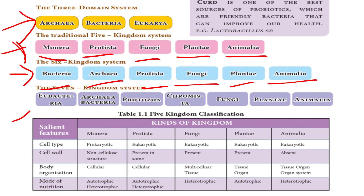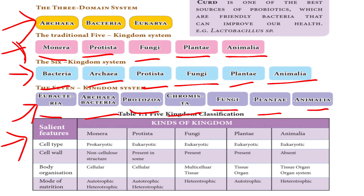The seven-kingdom classification includes Eubacteria, Archaebacteria, Protozoa, Chromista, Fungi, Plantae, and Animalia. These are the major kingdom classification systems used in biology.